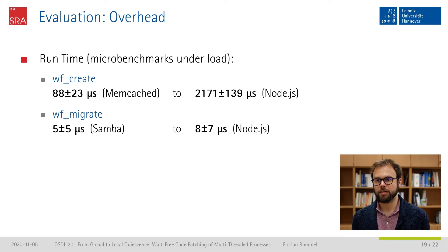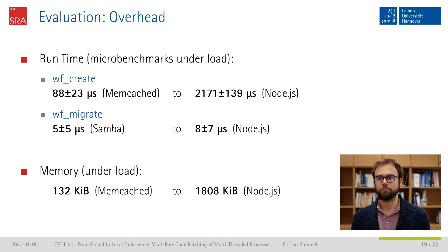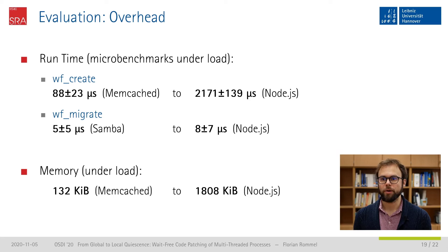For the overhead of the wait-free patching extension: creation of a new address-space generation ranged from 88 microseconds in memcached to about 2 ms in Node.js, and migration between generations is very fast at 5 to 8 microseconds. In terms of memory there is a permanent penalty from the master memory map that cannot be deleted, but only for processes that call wait-free-create. For our benchmark targets this was up to 1800 kibibytes depending on the complexity of the address-space anatomy.